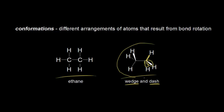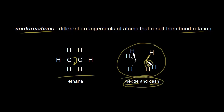This wedge and dash drawing represents one conformation of ethane. Conformations are different arrangements of atoms that result from bond rotation. We know that there's free rotation around this carbon-carbon single bond. This wedge and dash drawing right now represents what's called the staggered conformation of ethane. But if we rotate about this carbon-carbon bond, we're going to get different arrangements of the atoms, and therefore we will get different conformations.